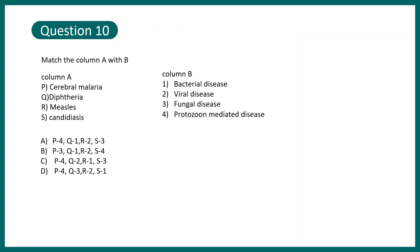Question 11: Match column A with column B. Column A lists — cerebral malaria, diphtheria, measles, and candidiasis. Column B has the disease types: bacterial, viral, fungal, or protozoan. This type of match-the-column format is very common in IIT JAM. The correct matches are: malaria is caused by a protozoan, diphtheria is a bacterially-mediated disease, measles is viral, and candidiasis is a fungal disease caused by Candida albicans.